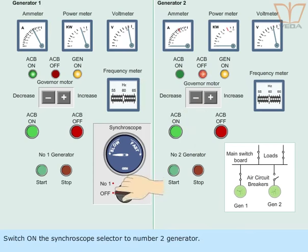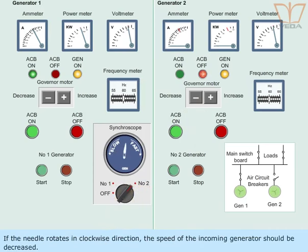Switch on the synchronoscope selector to number 2 generator. If the needle rotates in clockwise direction, the speed of the incoming generator should be decreased. If the needle rotates in anticlockwise direction, the speed of the incoming generator should be increased.